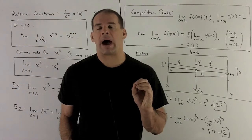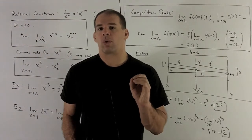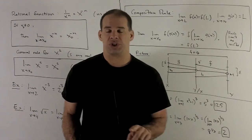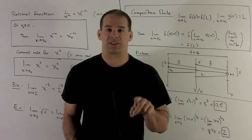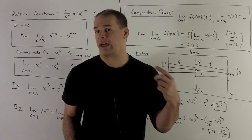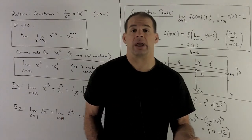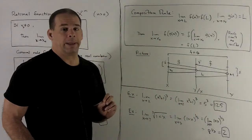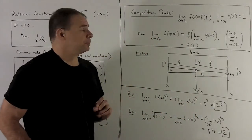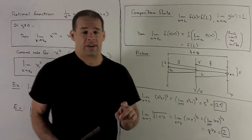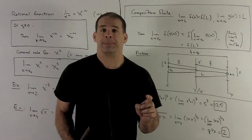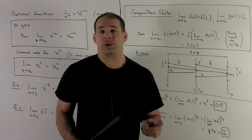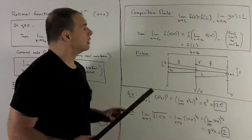Now, with x to a power, we need one more rule. That's going to give us anything where we're taking a function in terms of x to powers, and then sums and quotients, and then raise to whatever power you like. Our rule is going to be the composition rule — it's going to do what you would think: if I have a composition and I take the limit, and things are set up nicely, that's just going to be an evaluation of your composition.